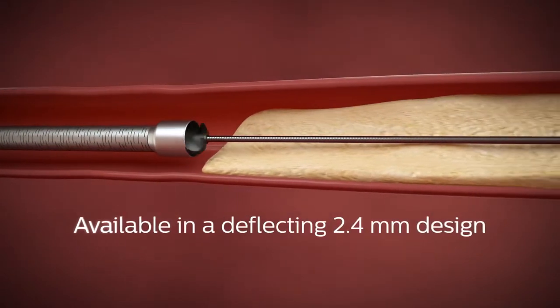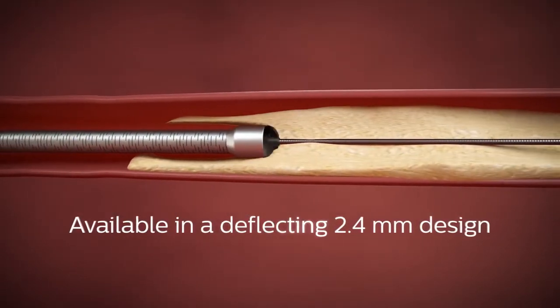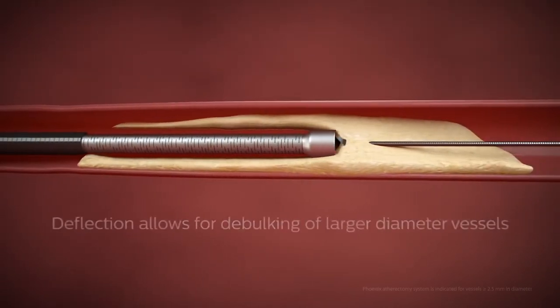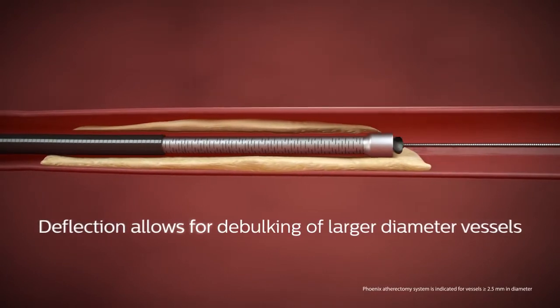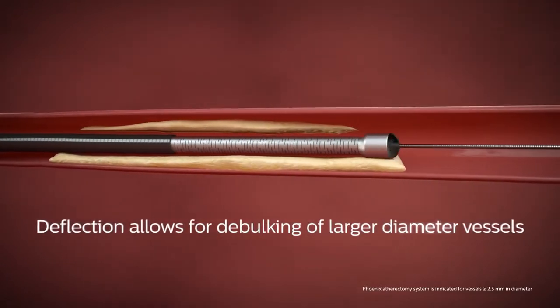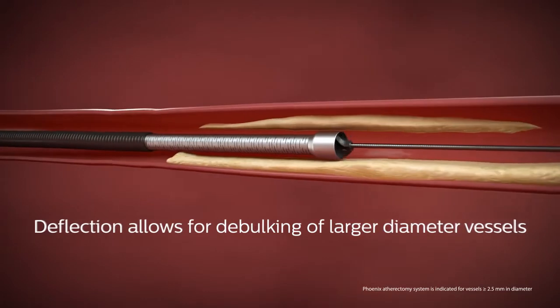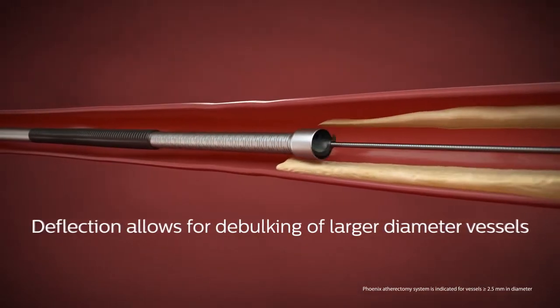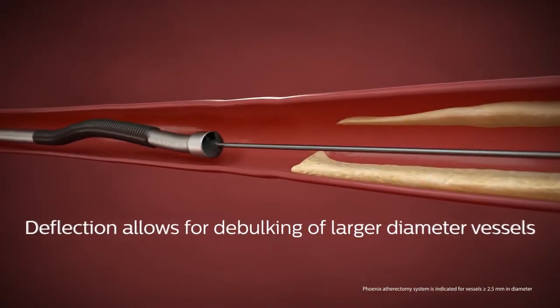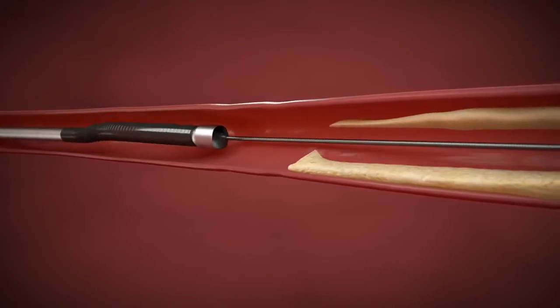Phoenix is also available in a deflecting 2.4 mm design to enable debulking of larger diameter vessels above the knee. After creating an initial channel by debulking in a straight fashion, the catheter tip can be deflected and rotated as needed to achieve the desired result.